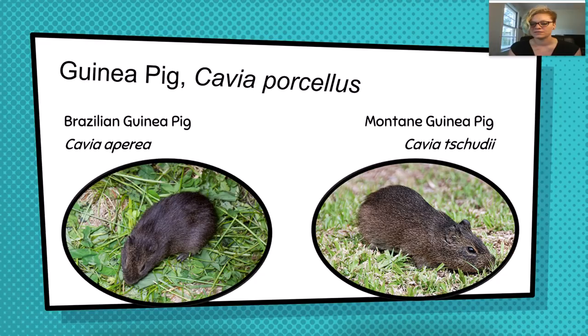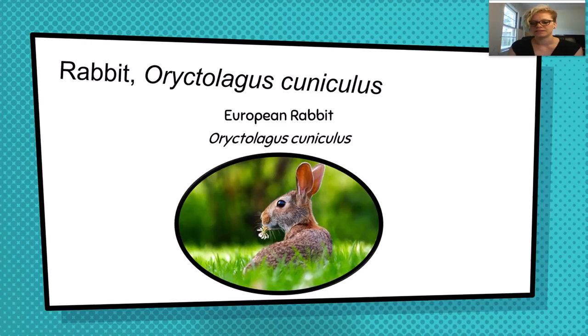Rabbits are believed to have first been domesticated in monasteries as a food source. They were decreed a form of fish so people were allowed to eat them during Lent. Therefore, monks kept them around in monasteries so that they could have some non-fish fish during Lent. While they have become more popular as pets, you can still buy rabbit meat and fur in the United States. Rabbits were domesticated a mere fifteen hundred years ago, and the domestic rabbit is not even considered its own subspecies — it still shares the same species name as its progenitor.